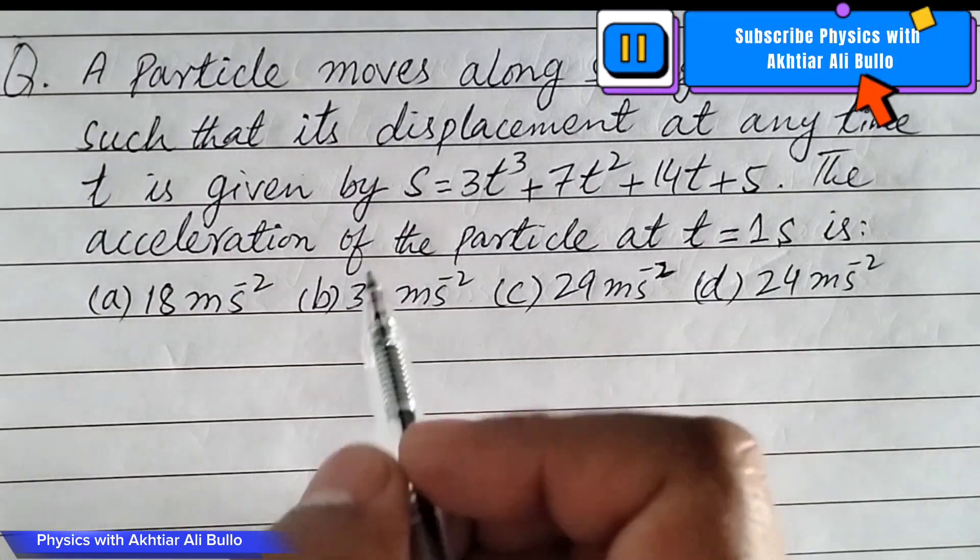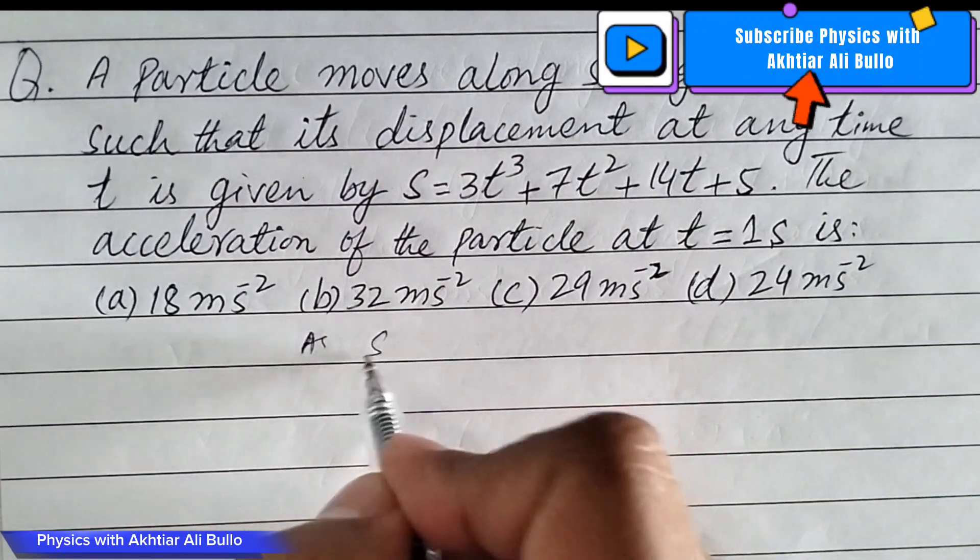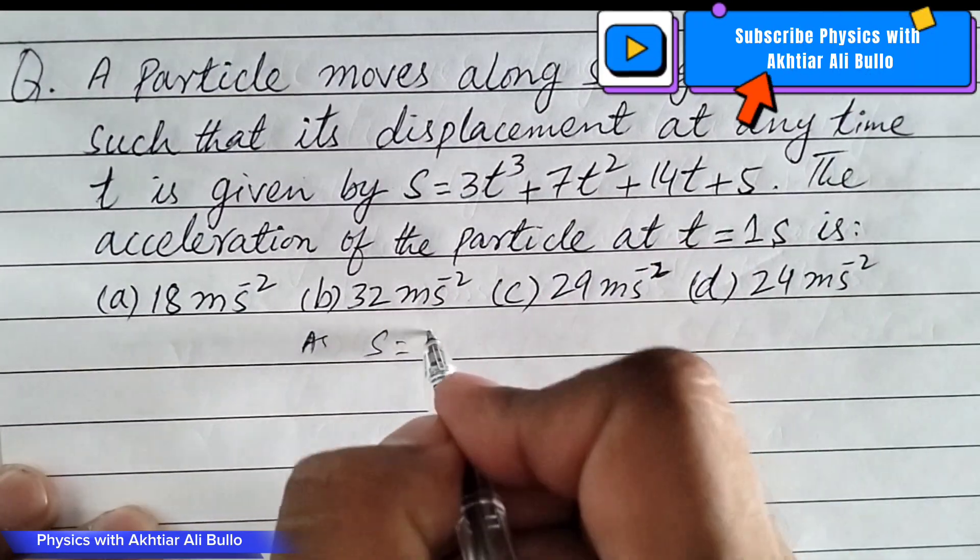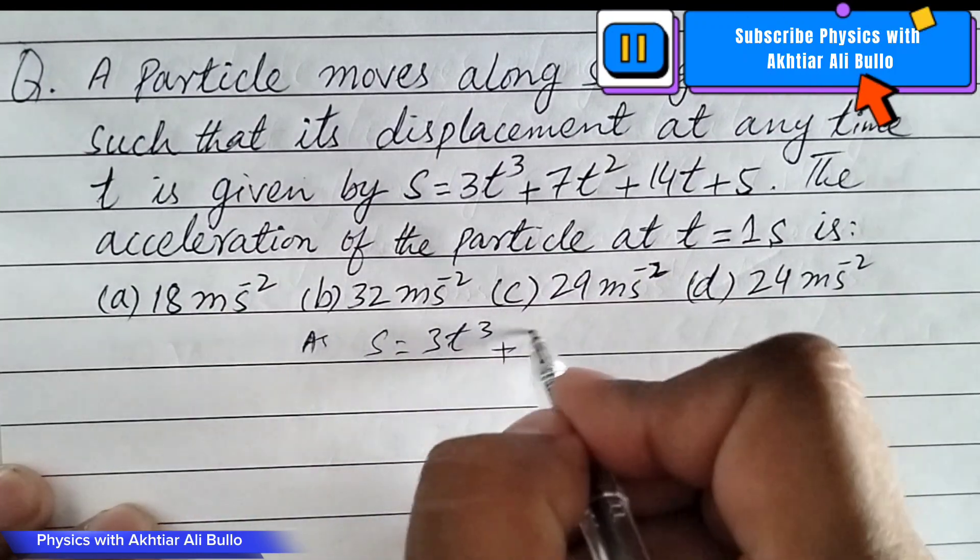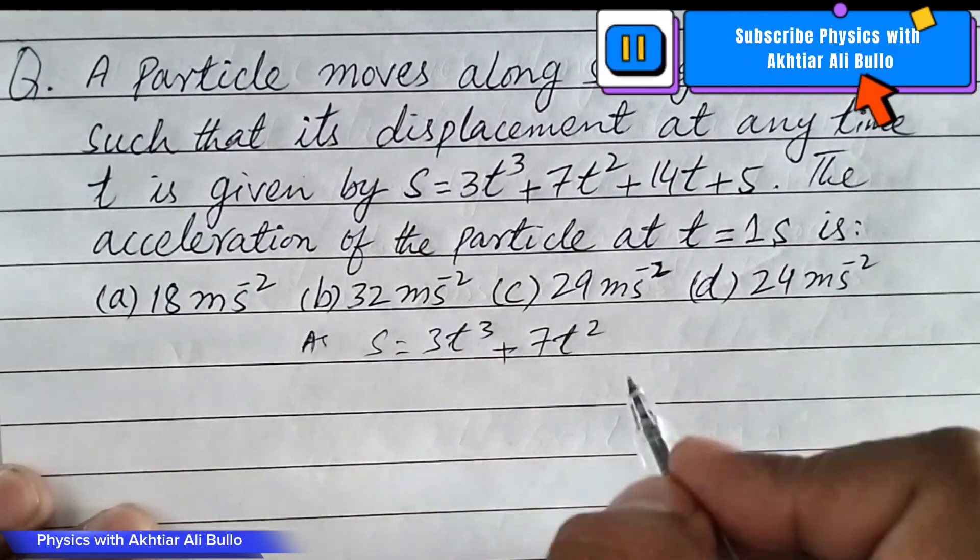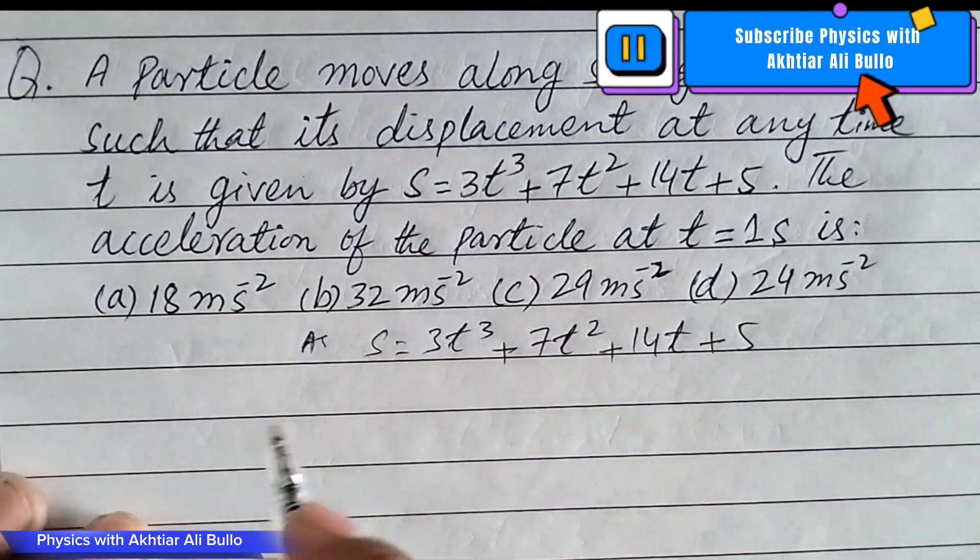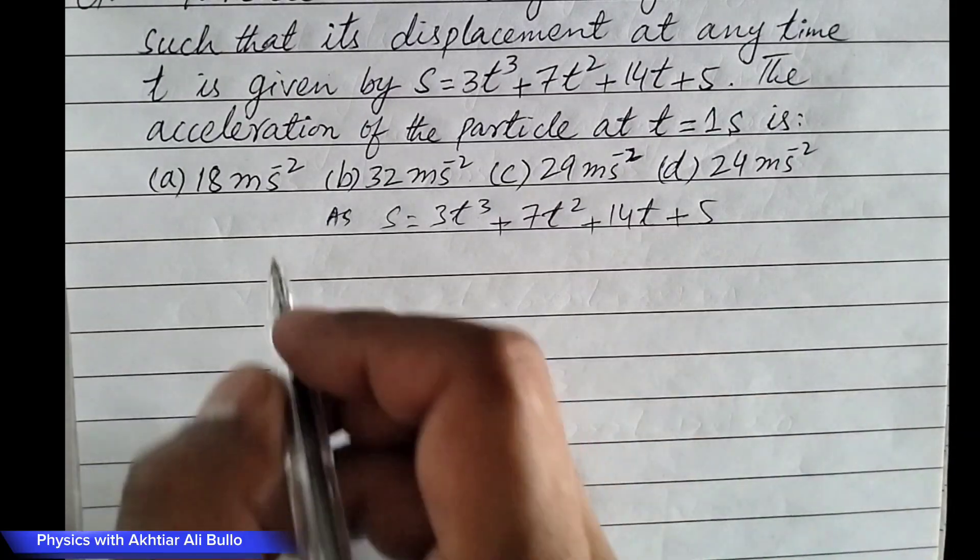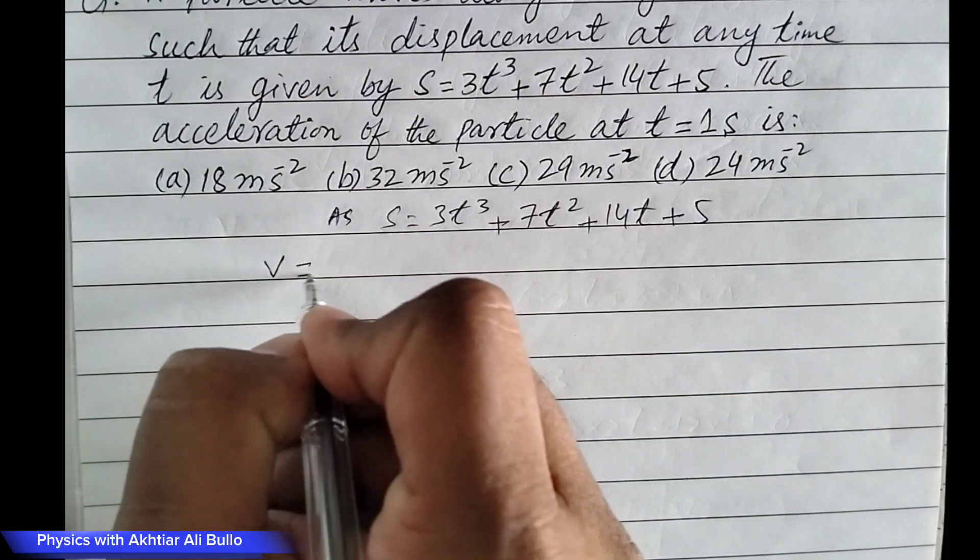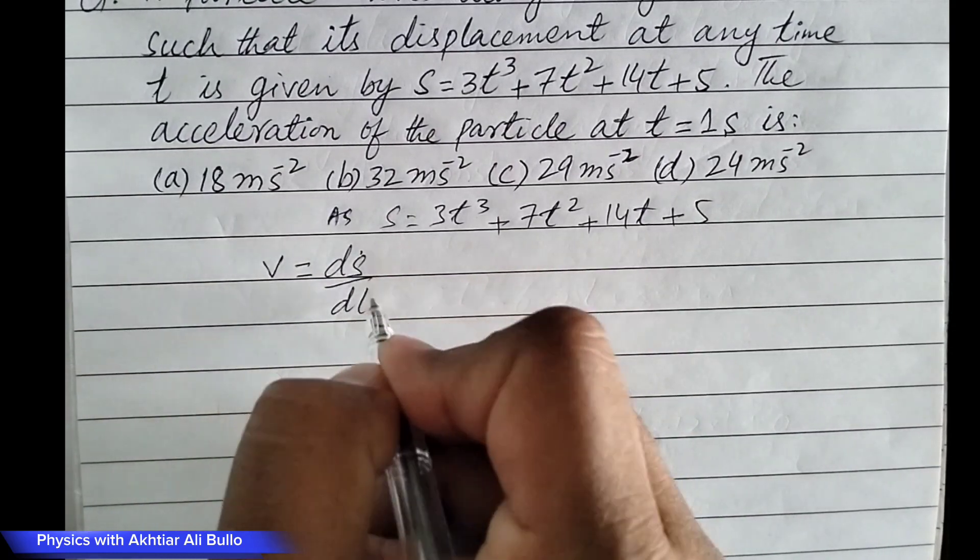s is given as 3t cube plus 7t square plus 14t plus 5. First of all, we will find velocity: v equals ds upon dt.